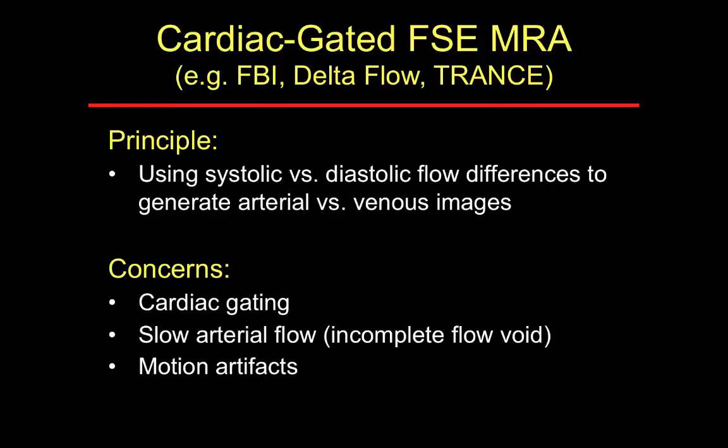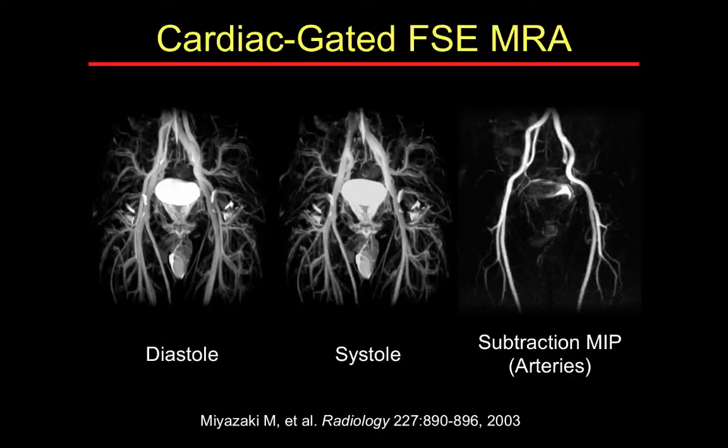There are some newer non-contrast pulse sequences, one of which is cardiac-gated fast spin echo MRA, known by various vendor-specific terms. The principle is to image during systolic and diastolic phases, and using the differences between the generated images, you can get selective arterial or venous images. The concerns include the need for cardiac gating, slow arterial flow, and motion artifacts from longer acquisitions. By subtracting the systolic image from the diastolic image, you get a more selective appearance of arterial structures.